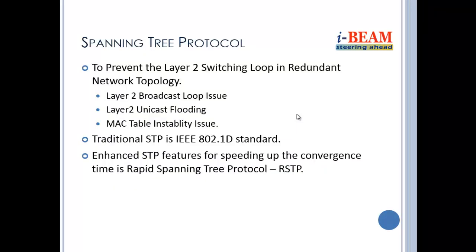The Spanning Tree Protocol addresses Layer 2 network loops. If you have a Layer 2 network loop, you may encounter Layer 2 loops. These loops can cause issues such as unknown unicast flooding, and if you have that kind of flooding, you will have MAC address instability.